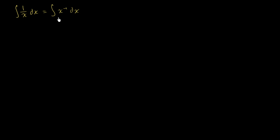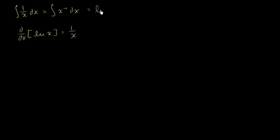You might be saying, well, I know what to do in this case. When we first learned about derivatives, we know that the derivative with respect to x of the natural log of x is equal to 1 over x. So why can't we just say that the antiderivative of this is equal to the natural log of x plus c? And this isn't necessarily wrong — the problem is that it's not broad enough.